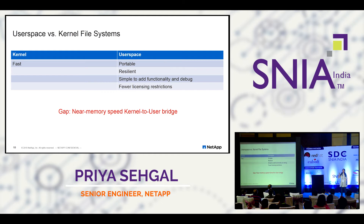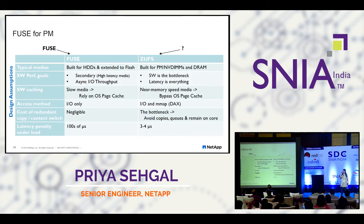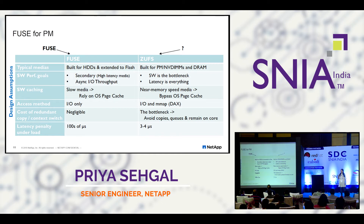However, FUSE is implemented keeping in mind slow media — hard drives and NAND flash. There's a big gap in the kernel-to-user bridge that FUSE provides. Comparing FUSE and ZOOFS: FUSE was basically meant for hard drives, relied heavily on page caching and asynchronous I/O — the I/O had to be copied to kernel buffers and so on, introducing around 100 microseconds of penalty — and that was okay in the slow media world. We couldn't use FUSE and implement a persistent memory file system on top of it. We needed something new. That is where ZOOFS comes into picture — it is a FUSE equivalent for NVM where latency is key.